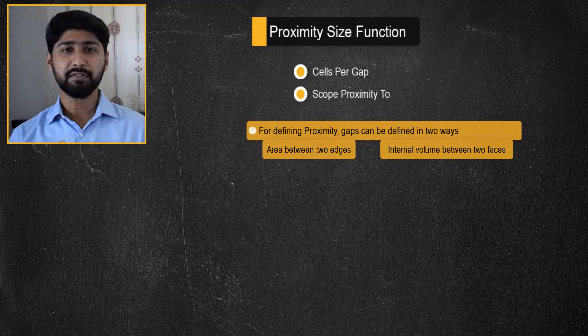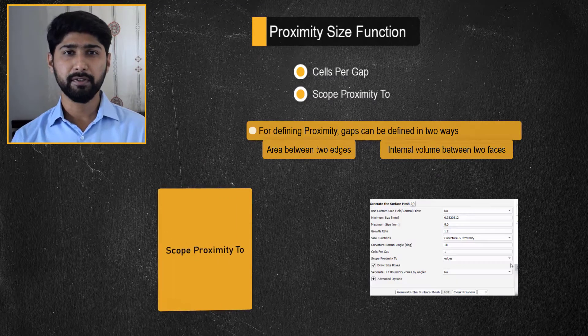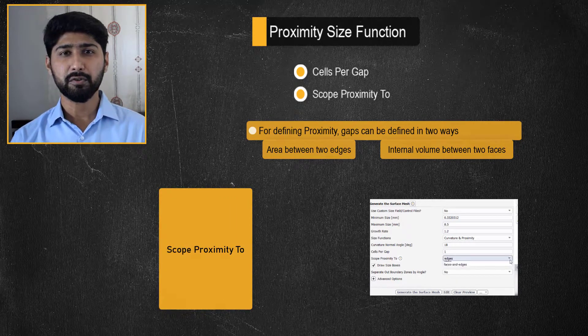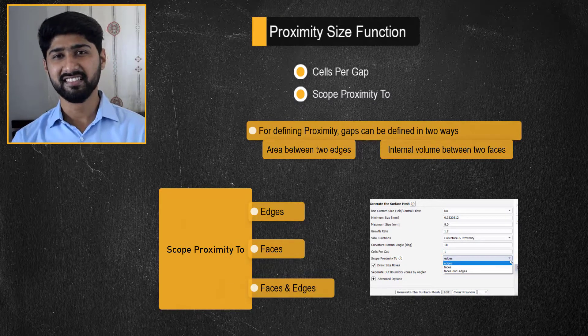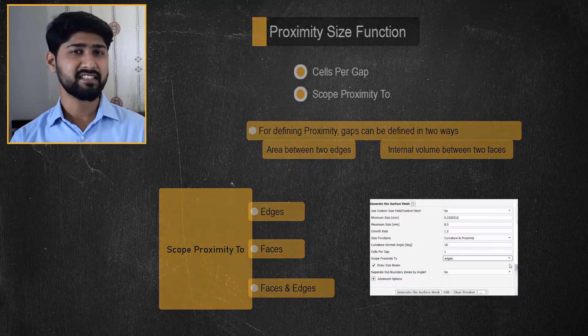We can use the additional options under the scope proximity to to set scope to edges, faces, or both faces and edges. Choose the appropriate option as needed.